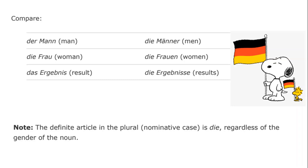You might have noticed that the definite article in the plural nominative is 'die,' regardless of the gender of the noun. Whether it is masculine, feminine, or neuter, it's still 'die.'